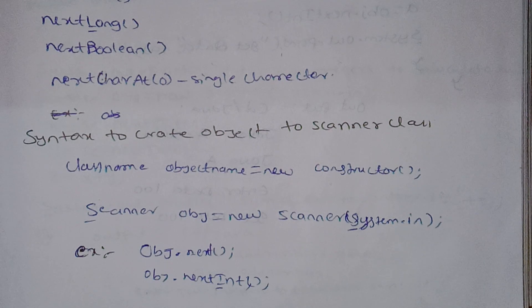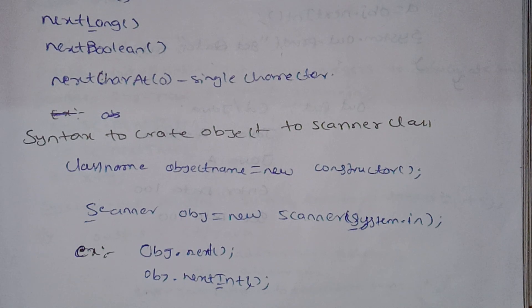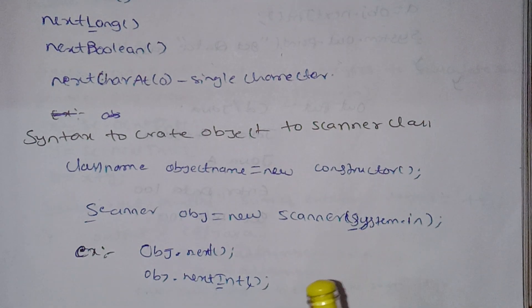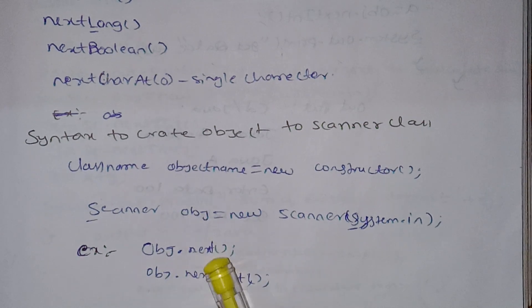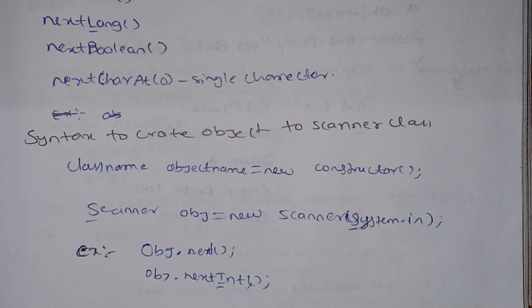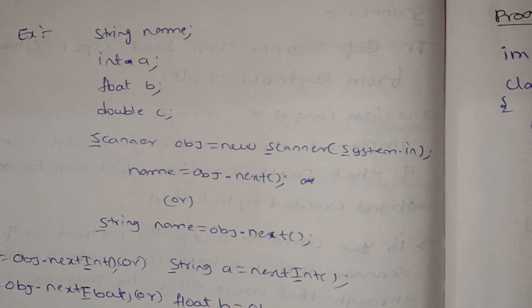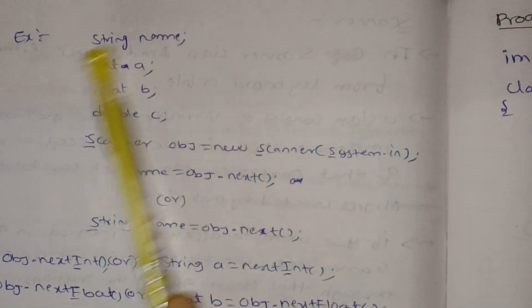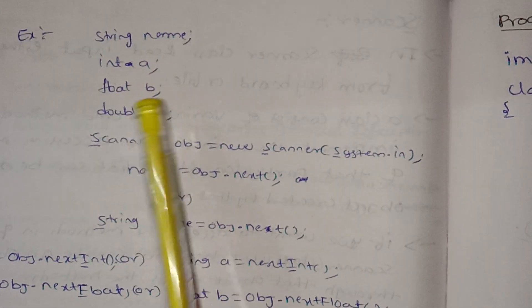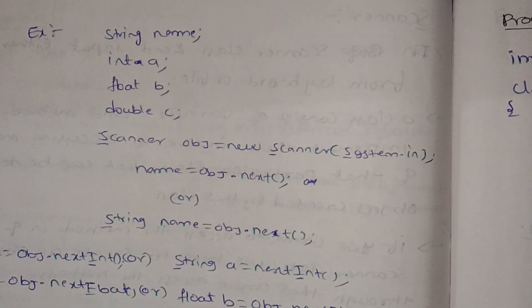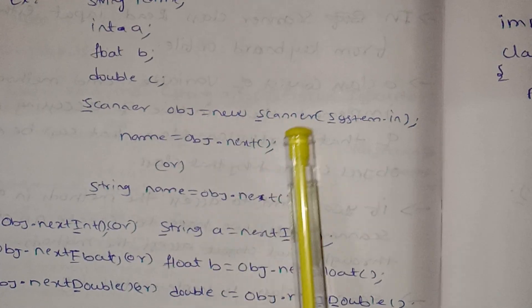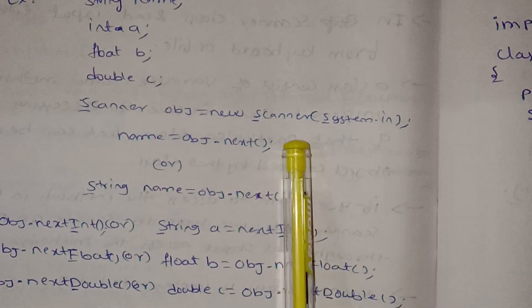System.in is a static variable of type InputStream. System.in is used to read data from the keyboard. To declare variables: String name — declare variables a, b, c. Scanner object — new Scanner with System.in. Then use object.next() to read the name.